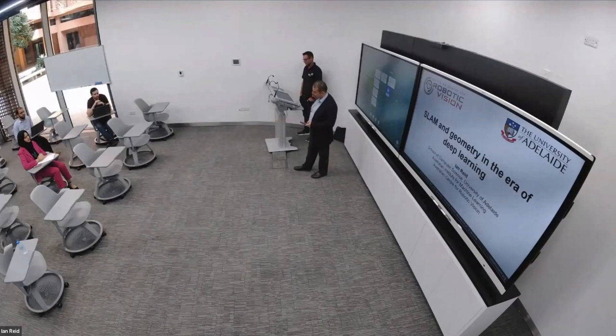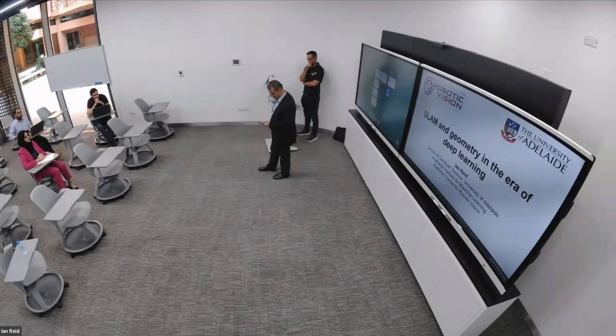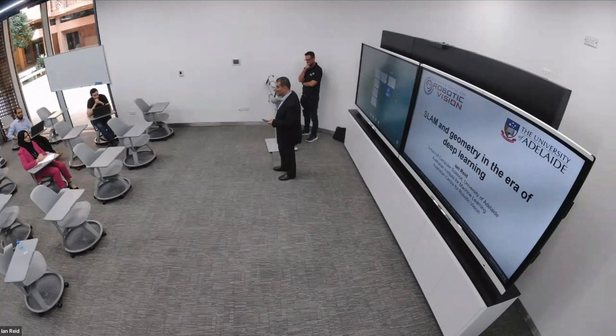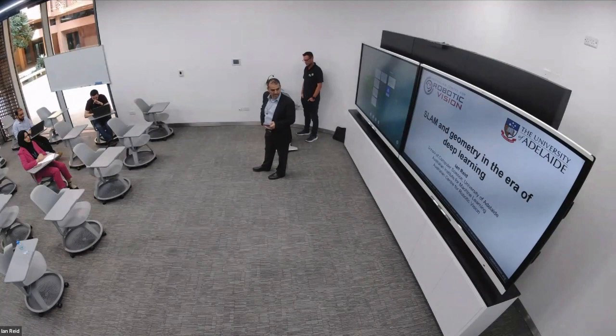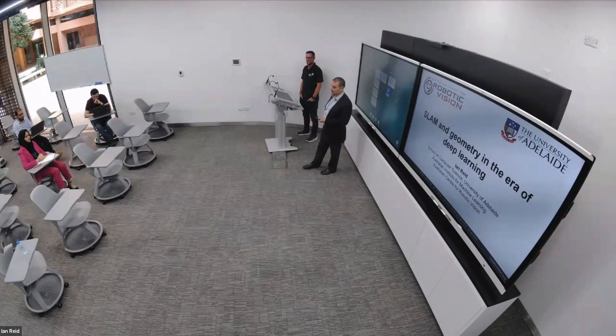Professor Reid is a professor of computer science at the University of Adelaide, where he was head of the school of computer science from 2018 to 2022. He is a fellow of the Australian Academy of Technology Sciences and Engineering, a fellow of the Australian Academy of Science, a former Rhodes Scholar, and held the Australian Laureate Fellowship from 2013 to 2018. He was deputy director of the Australian Centre for Robotic Vision and has worked on computer vision for more than 30 years, completing his PhD at Oxford in 1992.